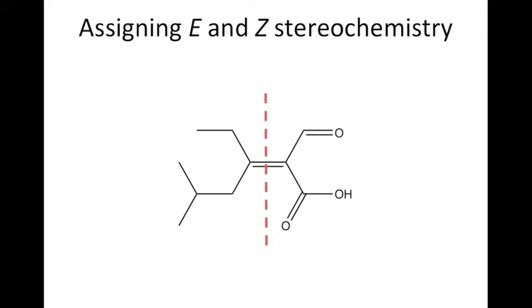If we focus on the left side of the structure, we can see that the two atoms directly attached to the sp2 hybrid carbons are carbon atoms. To break this tie, we must list the three atoms directly attached to each of these two carbon atoms in decreasing order of atomic number and analyze them. The top carbon is attached to one carbon and two hydrogen atoms. The same is true with the bottom carbon, which is attached to one carbon and two hydrogen atoms.